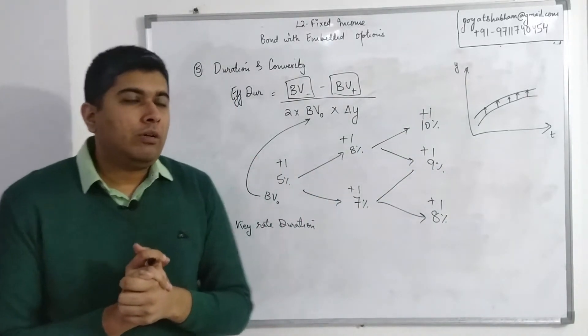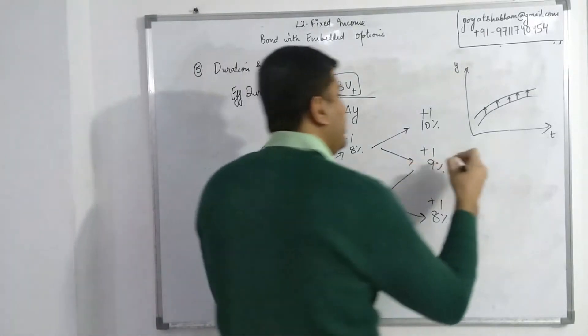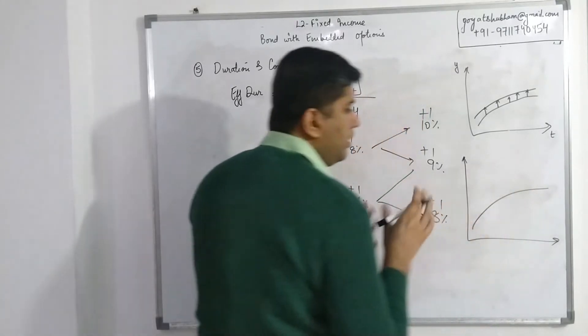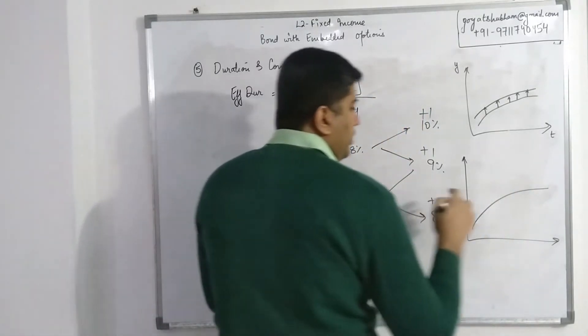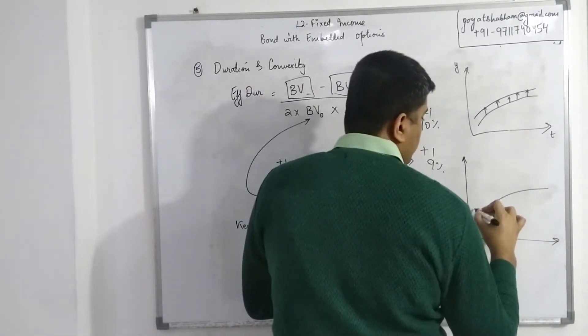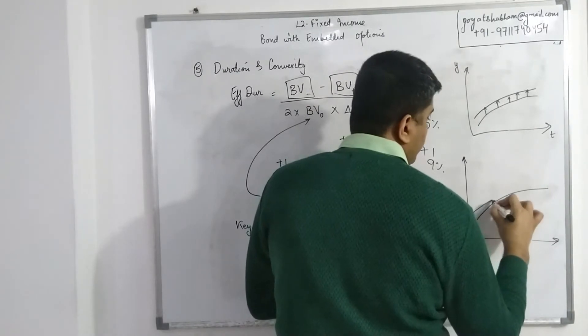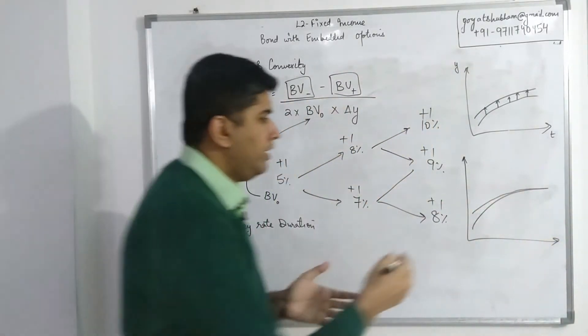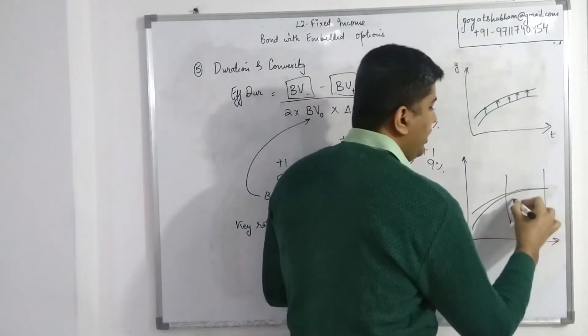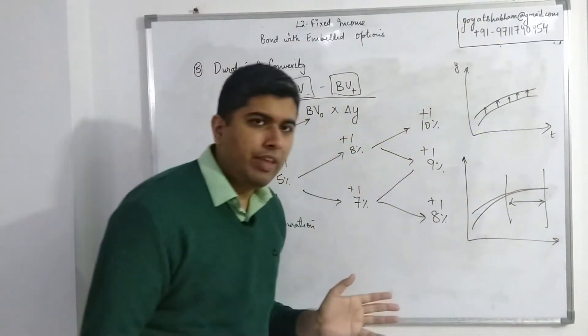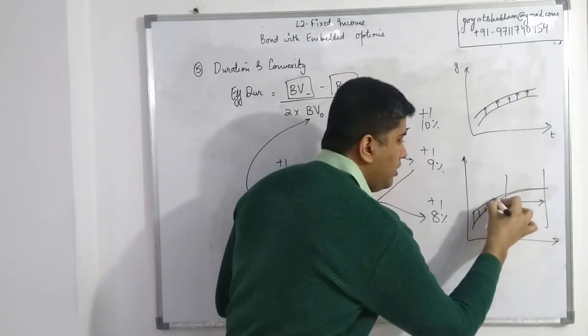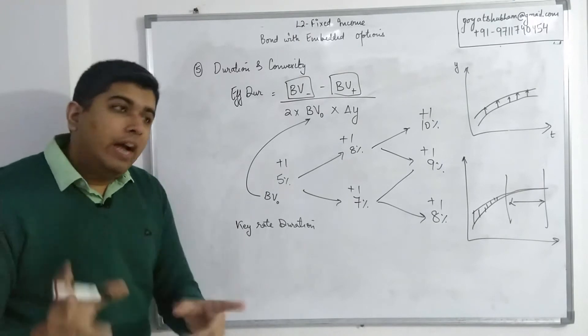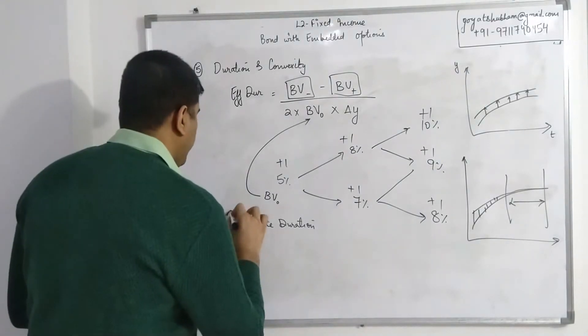But sometimes in the real world we often come across situations where this is your base term structure and the term structure is sort of going this way. So in the long run it is not really being affected; at higher time maturity it is more or less the same, but at lower maturities there is difference—the movement is of non-parallel nature. For that we use key rate duration.